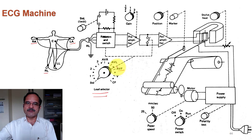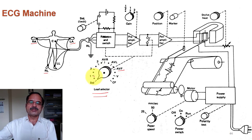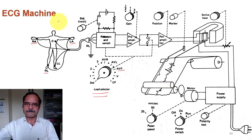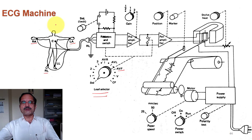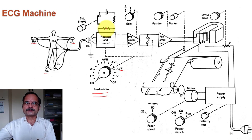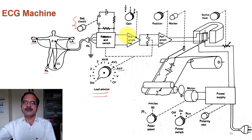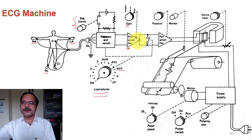There is a lead selector switch because at one time this plotter will plot only one ECG plot, and with 12 electrodes, 12 plots should be available. There is a standard 1 millivolt applied across this resistor divider network. The next stage is the pre-amplifier, and this is the gain adjustment of the pre-amplifier. Then there is the pre-amplifier, and its output is given to the pen amplifier.